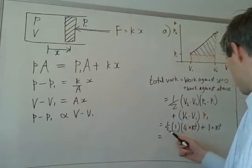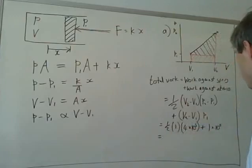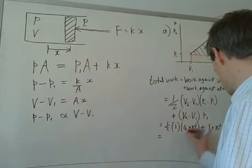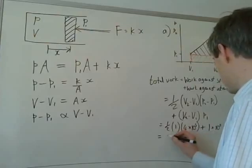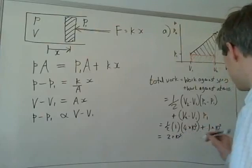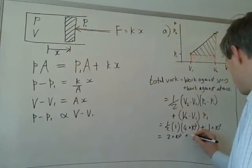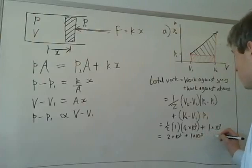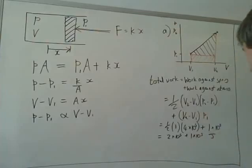So, this is, the work done against the spring is two times ten to the five pascals. The work done against the atmosphere is one times ten to the five pascals. And the units of the work done, the units of the work are joules. And we've been working in SI units, so it's not kilojoules or anything else.